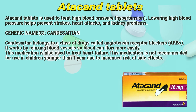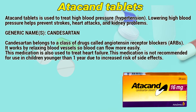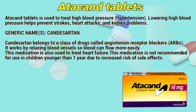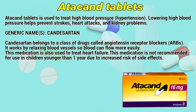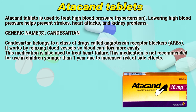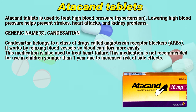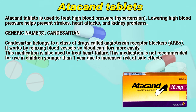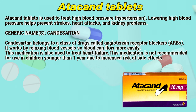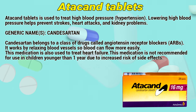Atacand tablets are used to treat high blood pressure, or hypertension. Lowering high blood pressure helps prevent strokes, heart attacks, and kidney problems. The generic name is candesartan. Candesartan belongs to a class of drugs called angiotensin receptor blockers. It works by relaxing blood vessels so blood can flow more easily.